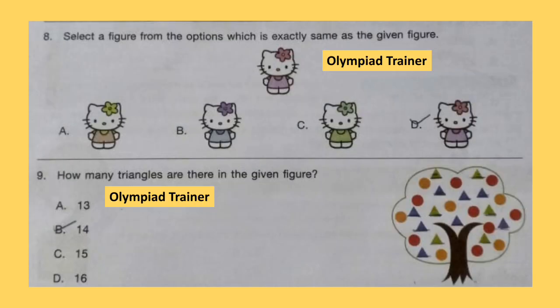Question 8. Select a figure from the options which is exactly the same as the given figure. The correct answer is option D — both kitties have the same color.